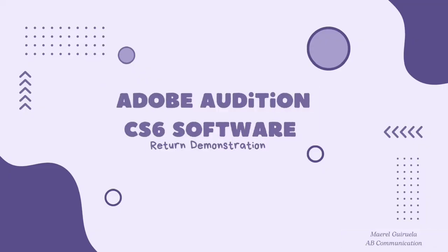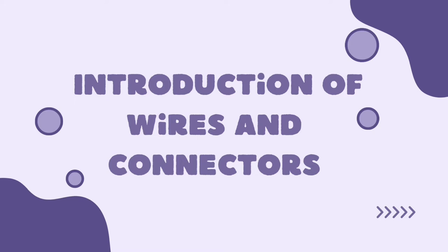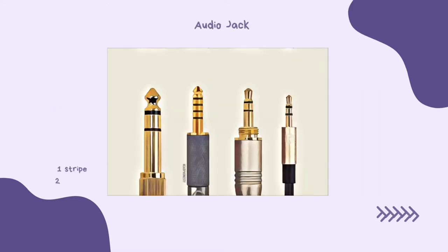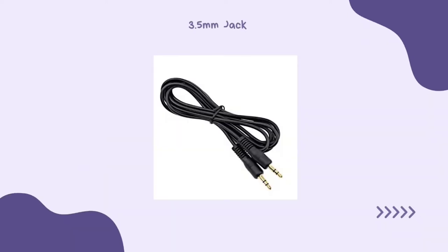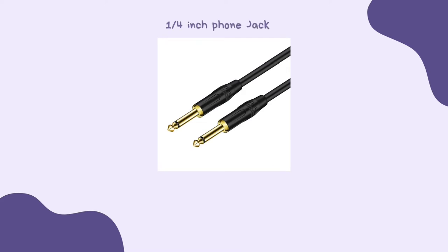How Adobe Audition software works. But before that, I will just discuss the introduction of wires and connectors. The first one is Audio Jack — it is an opening or a port that enables a fitting or compatible connector to be associated with the jack. One of these types is the 3.5mm headphone jack, which is an industry-standard audio plug most commonly used for connecting a pair of stereo headphones to your smartphone.